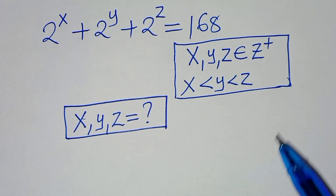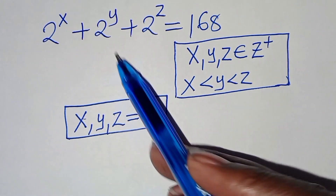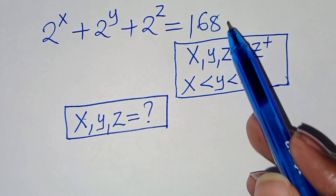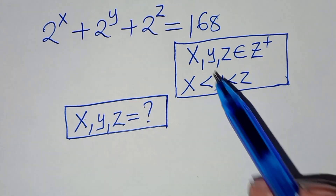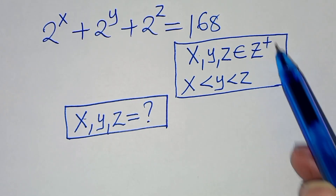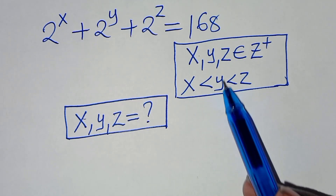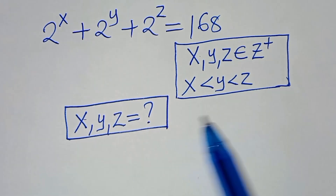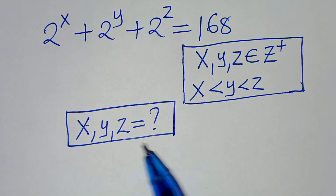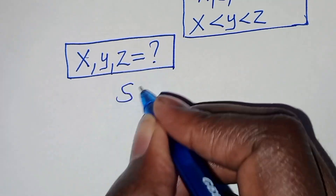Hello everyone, welcome to solve this nice algebra problem: 2 to the power of x plus 2 to the power of y plus 2 to the power of z equals 168, given that x, y, and z are members of positive integers, x is less than y, and y is less than z. What are the values of x, y, and z? Let's present the solution from here.